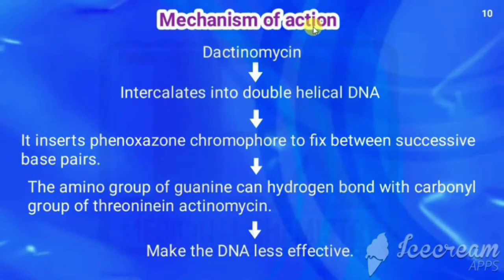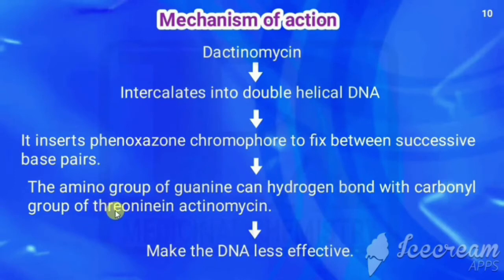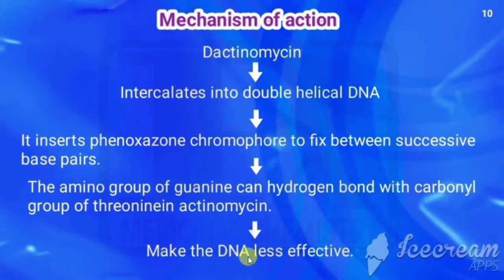The mechanism of action of dactinomycin: it intercalates into double-helical DNA. After intercalation, it inserts the phenoxosone chromophore between two successive base pairs — AT and GC. After insertion, the guanine in the DNA, which has an amino group, forms a hydrogen bond with the carbonyl group of threonine present in actinomycin. This makes the DNA less effective in replication.